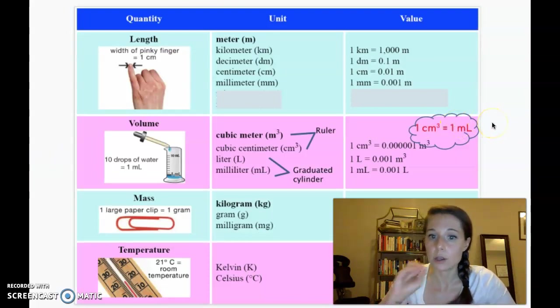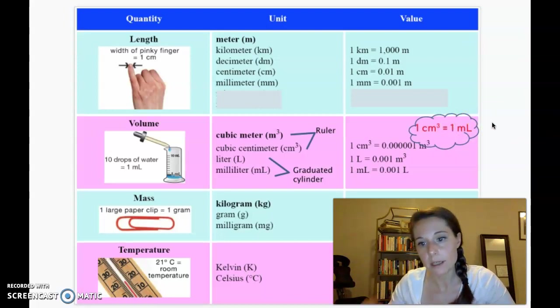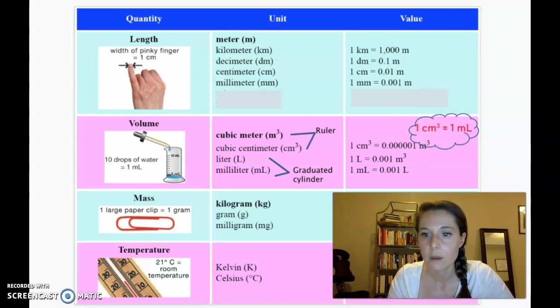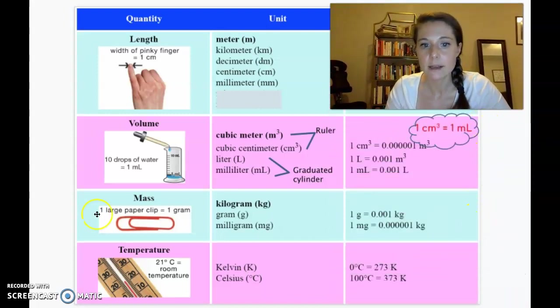All right, so another thing to know is how to convert a cubic centimeter to a milliliter, and luckily there are a one-to-one ratio, so one cubic centimeter is equal to one milliliter. All right, so what about mass? One gram is about the weight of a large paper clip, and so that's again pretty small.